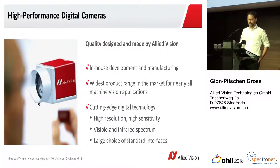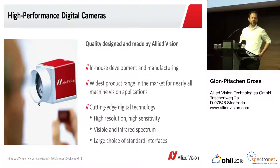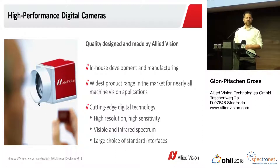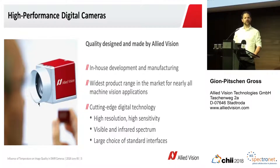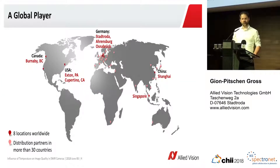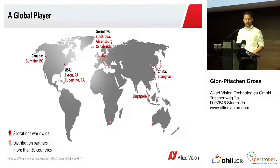At Light Vision, we design and manufacture high-performance digital cameras, and we are proud to have one of the largest product ranges in the market for nearly all machine vision applications, from high resolution to high sensitivity, from visible to infrared spectrum, and with a large choice of standard interfaces. Our headquarter is in Germany in Stadroda, but we have eight locations worldwide: three in Germany, one in Canada, two in the US, one in Singapore, and one in Shanghai.